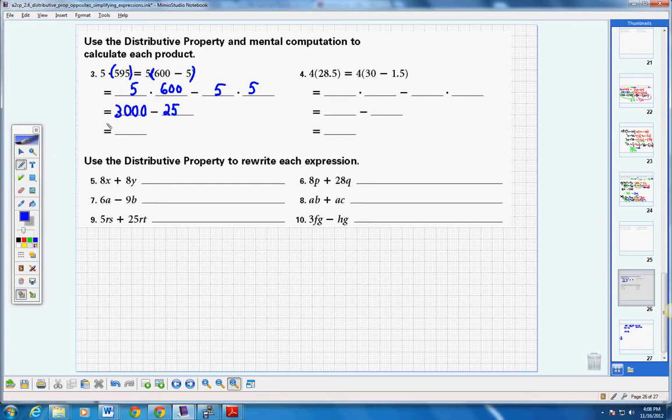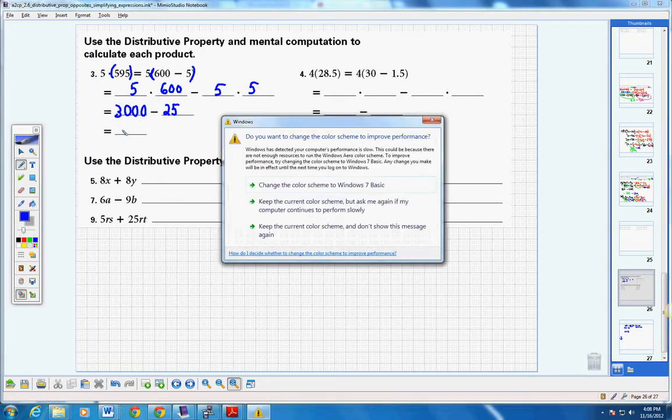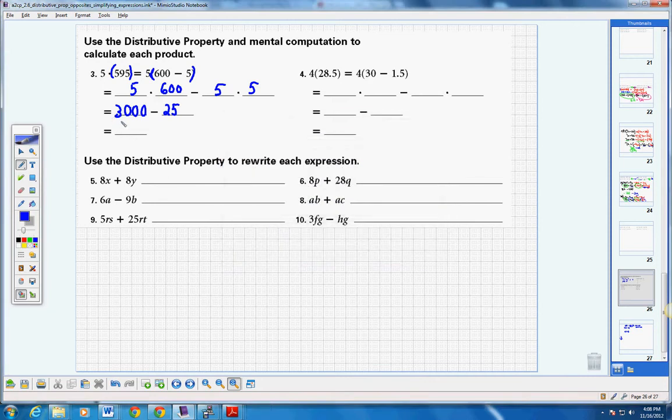So 5 times 600 is 3000 minus 5 times 5, which is 25. So understand I do not need a calculator, I am smarter than a calculator. Then to take 3000 minus 25, well I know if I subtract 25 from that, I know I'm going to have 2900 and then 25 less. Well I know that 25 less than 100 is 75. 2975 is my answer for 5 times 595, a way to do that in your head.